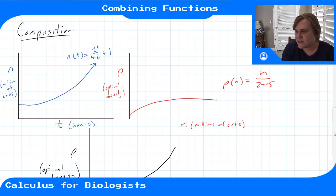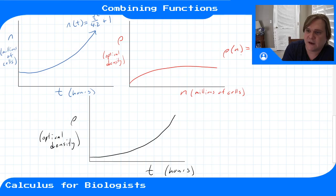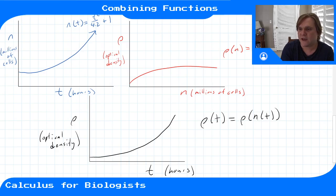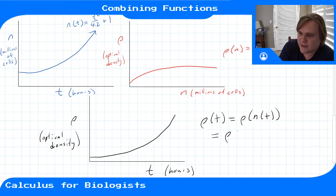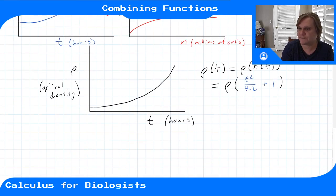When doing this experiment, you're actually measuring the optical density over time, and then using that to back out the number of cells. This is a composition of functions — the density depends on the number of cells, and the number of cells depends on time. So the way density depends on time is ρ(t) = ρ(n(t)). We know ρ(n) and we know n(t), so composing ρ with n(t) gives ρ(t). We apply the ρ function to our n(t) = t²/4.2 + 1.